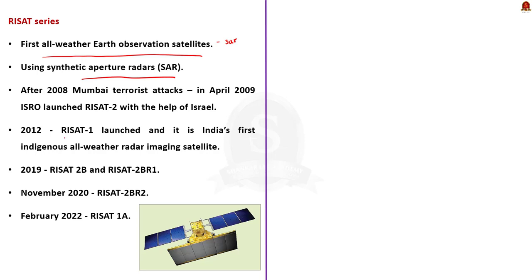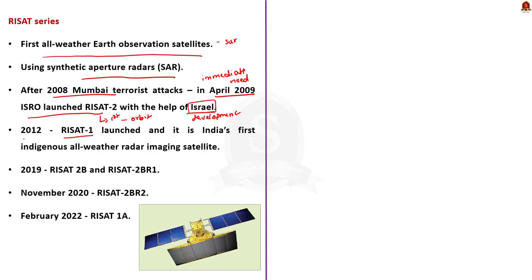Initially RISAT-1 was planned for launch. But after the 2008 Mumbai terrorist attacks, India needed immediate surveillance capability and the indigenous technology for RISAT-1 was still under development. So with the help of Israeli technology, in April 2009 ISRO launched RISAT-2, the first of the RISAT series to reach orbit. This satellite enhanced India's disaster management and surveillance capabilities. Note that RISAT-2 was not indigenous. Only in 2012 did ISRO launch RISAT-1, India's first indigenous all-weather radar imaging satellite. RISAT-2B and RISAT-2BR1 were launched in 2019, and RISAT-2BR2 and RISAT-1A in November 2020 and February 2022 respectively.